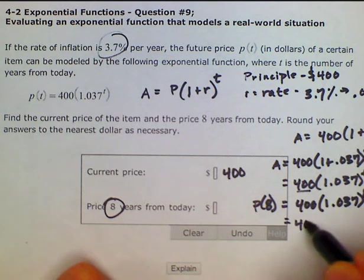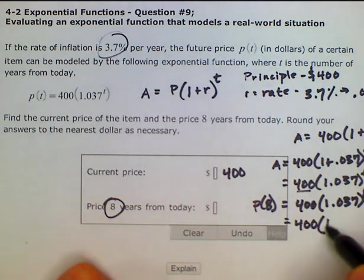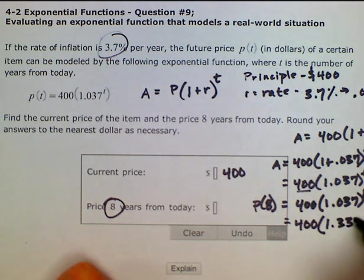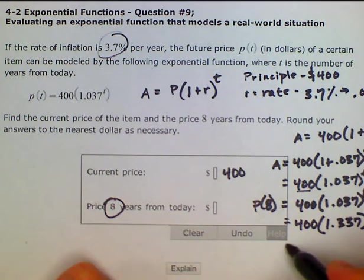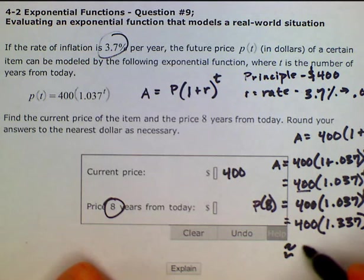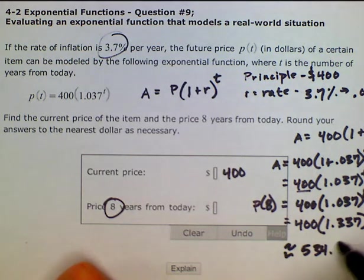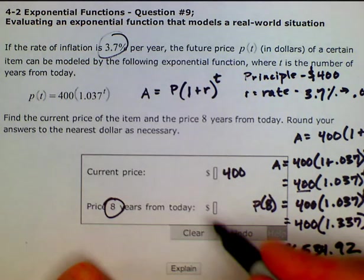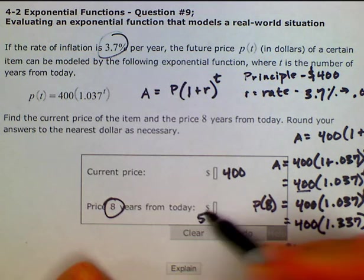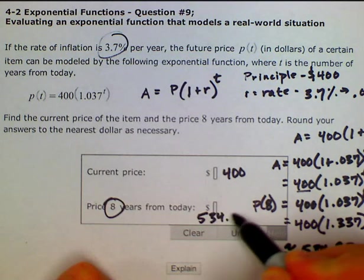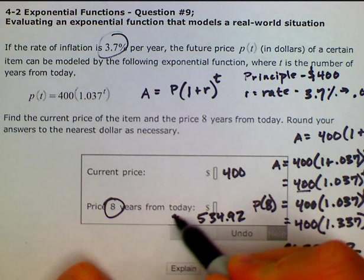Which is equal to 400 times 1.337, that's rounded, which is also approximately $534.92. So that would be our price 8 years from today, $534.92 is our approximate value.